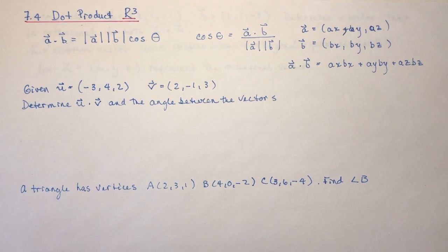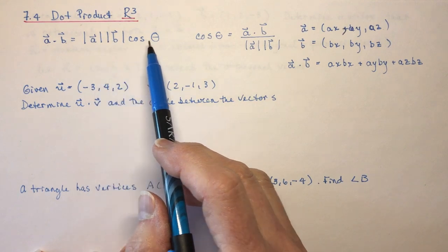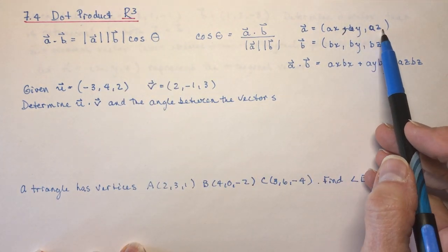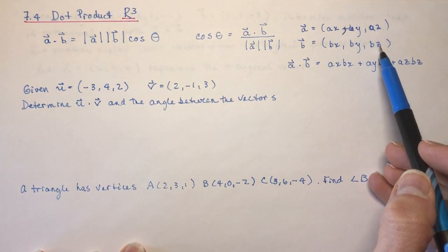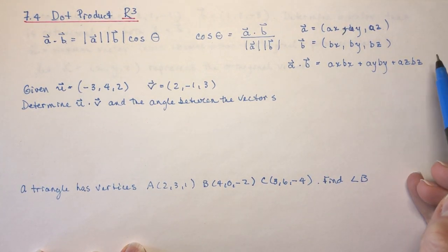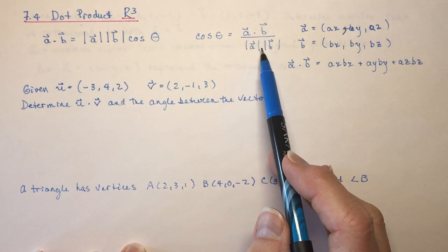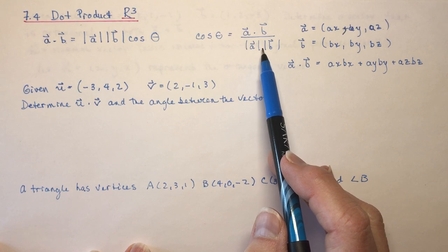7.4 dot product in R3 now. I've done the R2 ones in a separate video, and now we're going to talk about R3. There's no difference between R2 and R3 except for the fact that we now have a third variable, az and bz. The dot product is just ax bx plus ay by plus az bz, and the two formulas still hold whether you're using vectors with two variables or three.